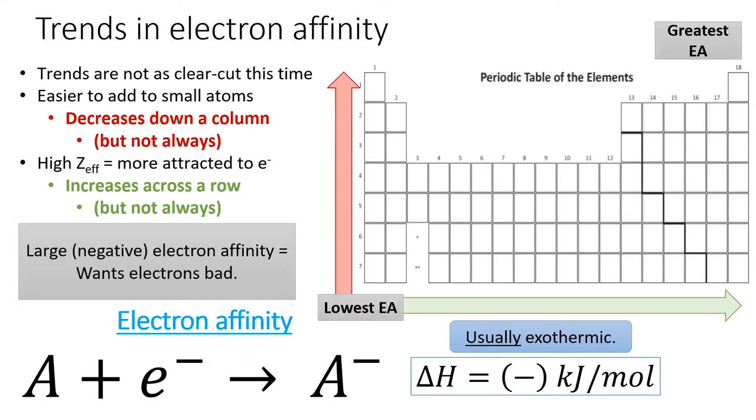This means that the elements with the greatest electron affinity live at the upper right of the table, except not the noble gases, and the elements with the lowest electron affinity live in the lower left of the table, but also include the noble gases.